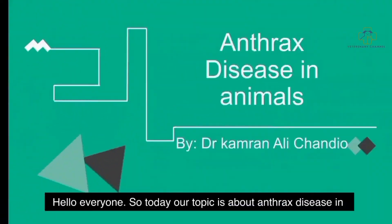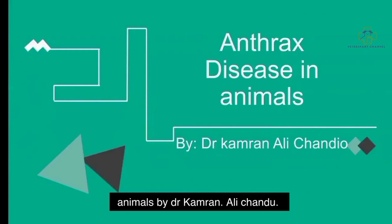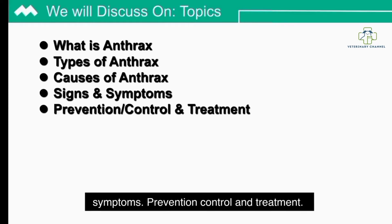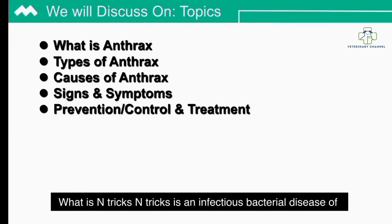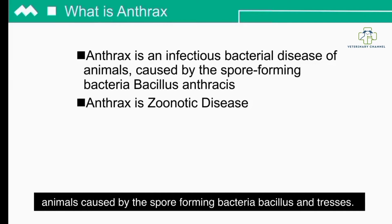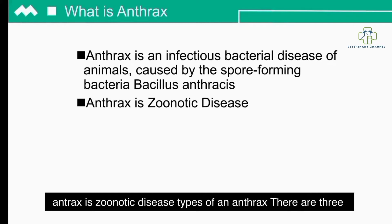Today our topic is anthrax disease in animals, presented by Dr. Kamran Ali Chandio. We will discuss what is anthrax, types of anthrax, causes, signs and symptoms, prevention, control, and treatment. Anthrax is an infectious bacterial disease of animals caused by the spore-forming bacteria Bacillus anthracis. Anthrax is a zoonotic disease.